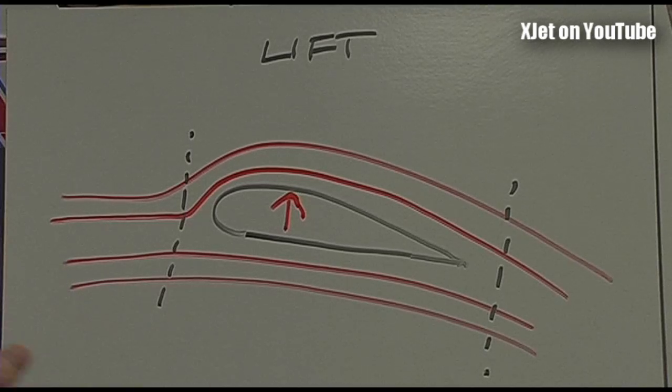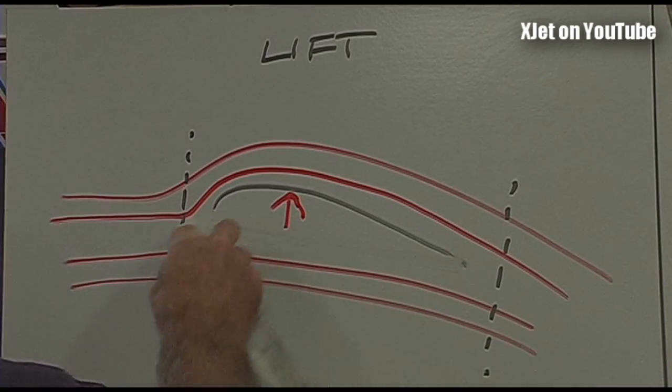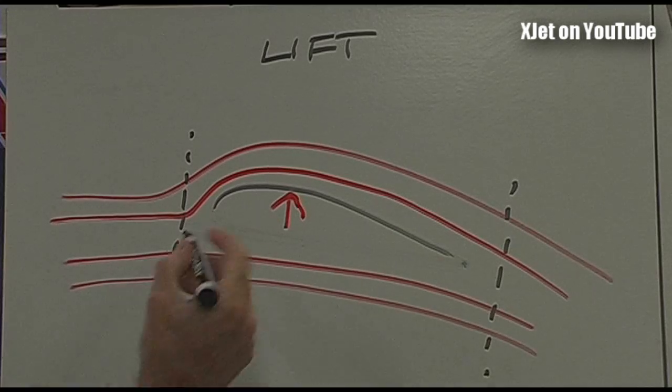At least that's the textbook version of how an airfoil wing creates lift. But I think if you've been flying models for any length of time you'll know that it's not always like that. Not all our models have symmetric or have lifting wing sections. In fact, a lot of aerobatic models for instance have symmetrical wings.